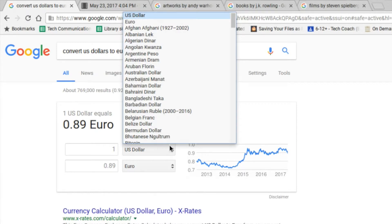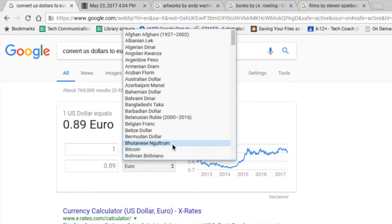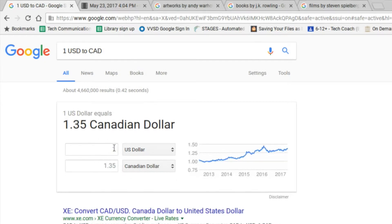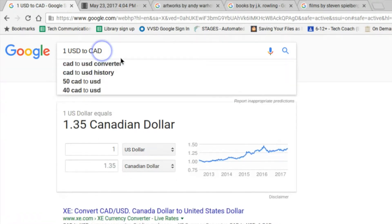Then you can change this if we wanted to check it against something else here. A Canadian dollar. And there you go. So converting currency, simple as cake.